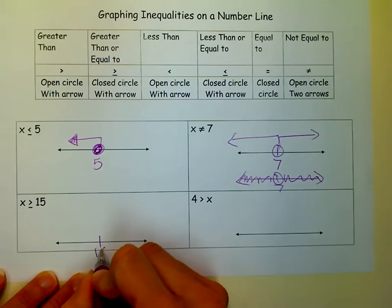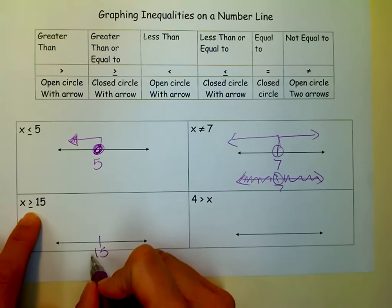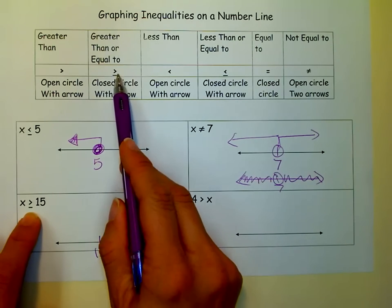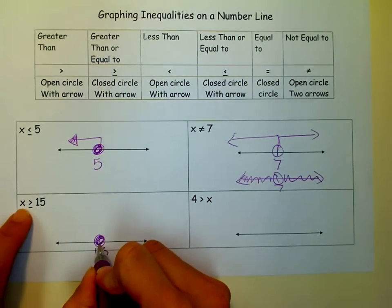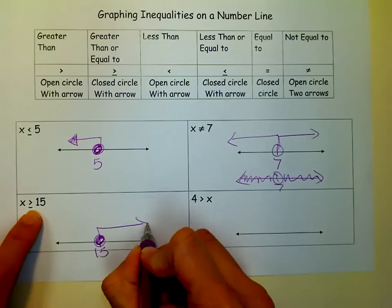Over here, there's a 15. So that tells me it's a closed circle, because it's a greater than or equal to. The equal to tells me closed circle. The X is on the left, so I can follow the arrow. So I go to the right.